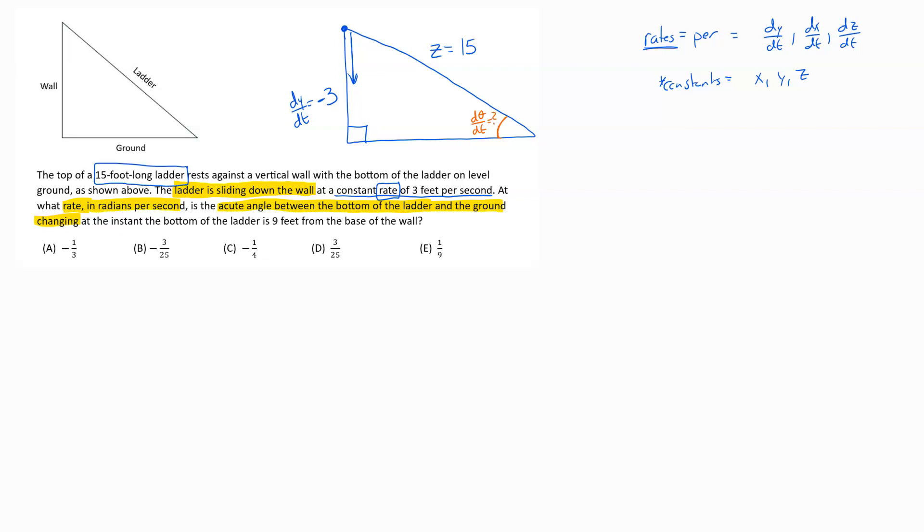At the instant, the bottom of the ladder is 9 feet from the wall. So then the bottom of the ladder would be this section here, and when it's 9 feet from the wall, so that's telling us, again, no word of rate in there. So that's a flat amount that's going to be 9.